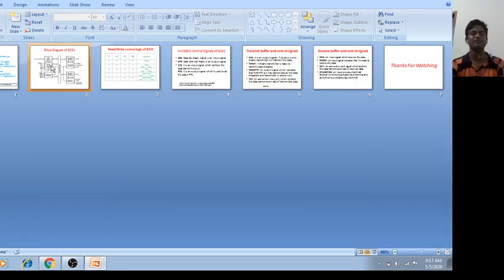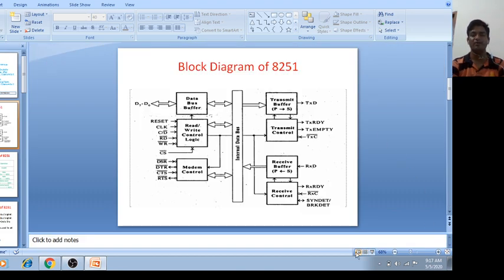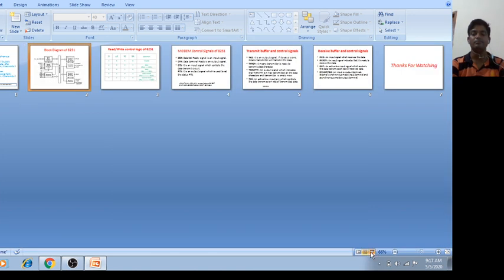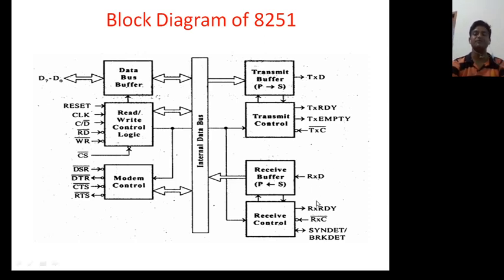Now we will see the block diagram of this. This is the block diagram of your 8251. It has two sections, transmitter and receiver section. For this you have transmitter buffer, transmit control.